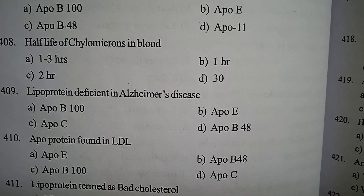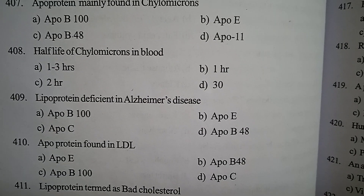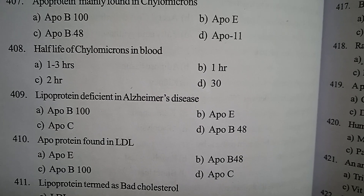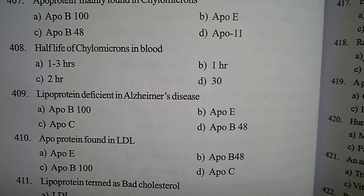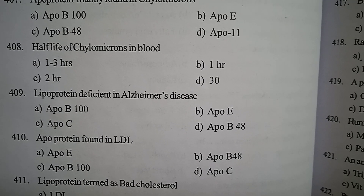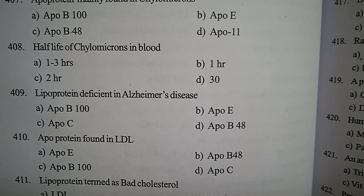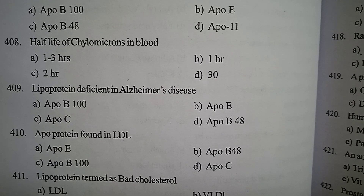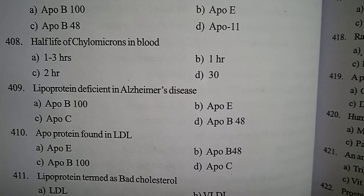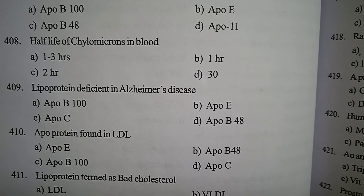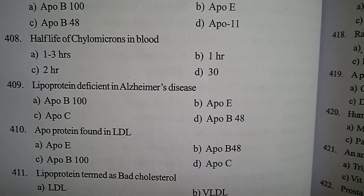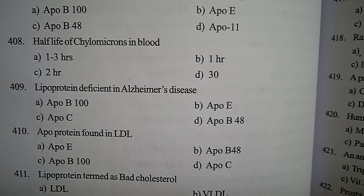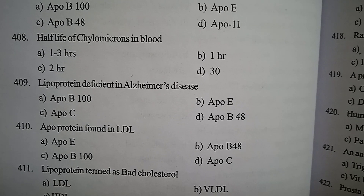Next one: apo protein found in LDL — option A ApoE, option B ApoB-48, option C ApoB-100, option D ApoC. Correct answer: option C, ApoB-100, which is seen in LDL.